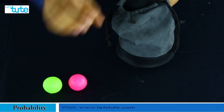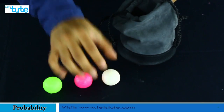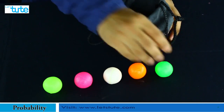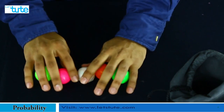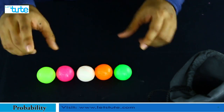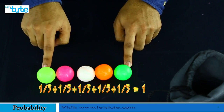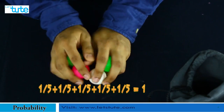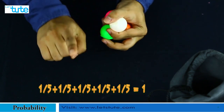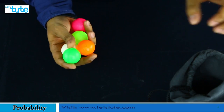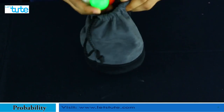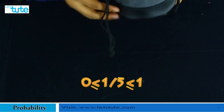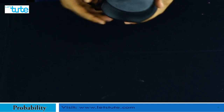Each ball — the fluorescent, green, pink, white, and orange — will each have a probability of 1/5. Adding all probabilities: 1/5 + 1/5 + 1/5 + 1/5 + 1/5 equals 1. This satisfies the sum of probabilities rule. Also, 1/5 falls between 0 and 1, so it satisfies all the rules. The ball experiment is now complete.